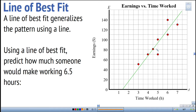A line of best fit allows us to make predictions. For example, using a line of best fit, predict how much someone would make working six and a half hours. I go to where six and a half hours is on the time-worked axis, read up until I hit the line, and I can predict that somebody would make about one hundred and thirty-two dollars.